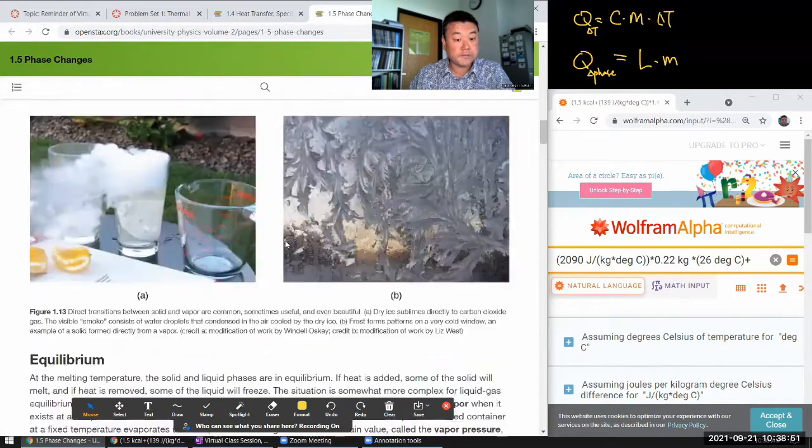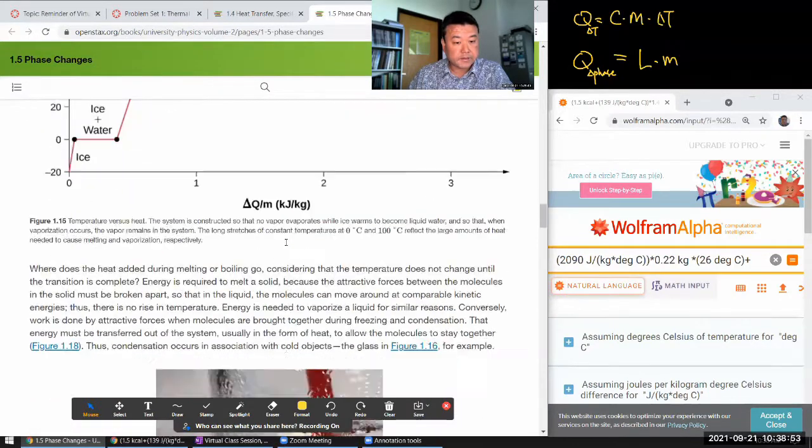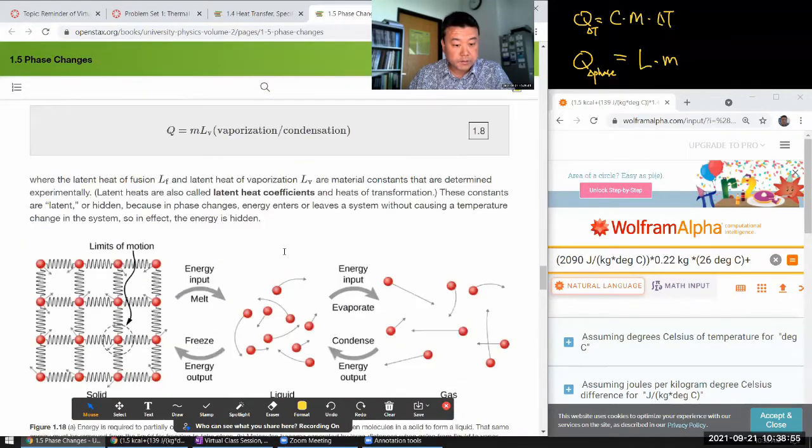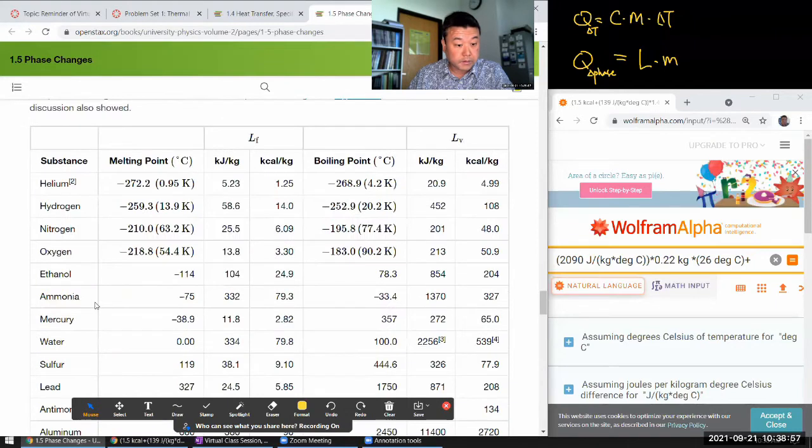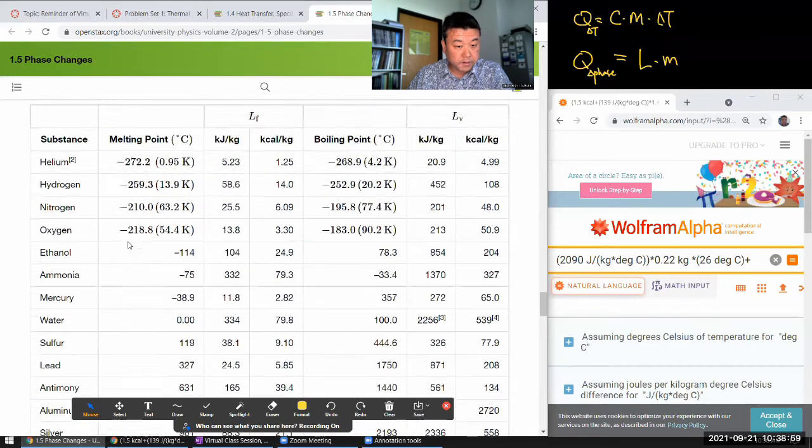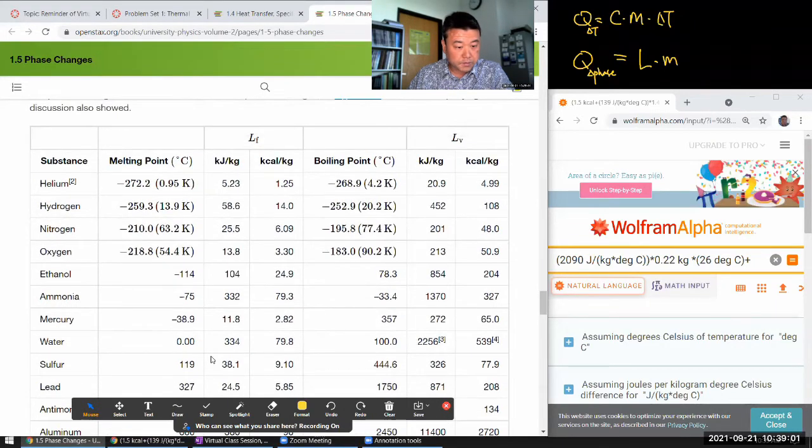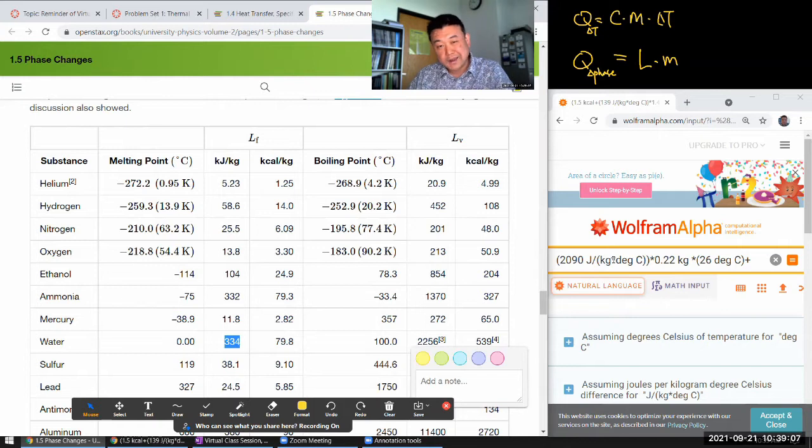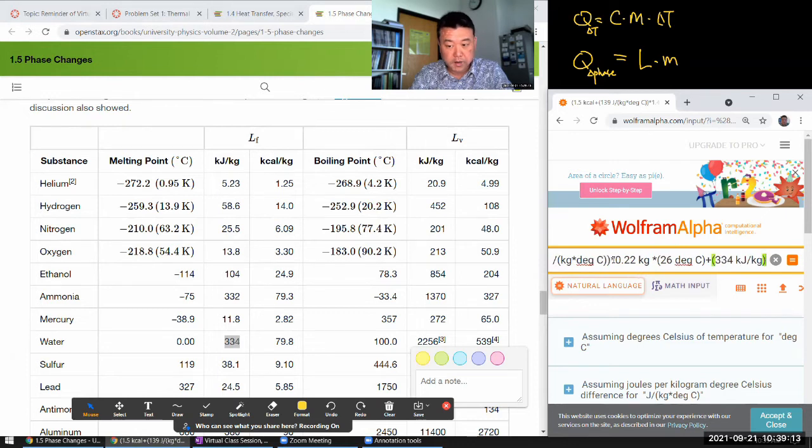We have latent heat of fusion for water. This is 334 - watch out for the units. Here I'm going to type in the units and let WolframAlpha do the unit conversion for me. 334 kilojoule per kilogram times still 0.22 kilogram of ice turning into water.